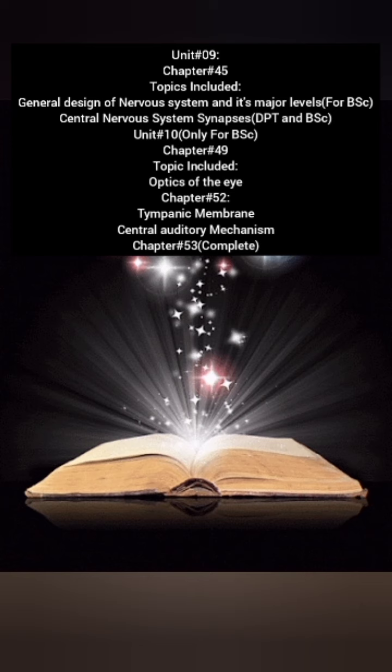Unit number nine is the nervous system, which is mostly the dominant unit for BSc Honours students. Topics like neurons and neuroglial cells are mentioned for DPT students but are not in the official guidance, so these can be studied from other recommended books like Ross and Wilson.